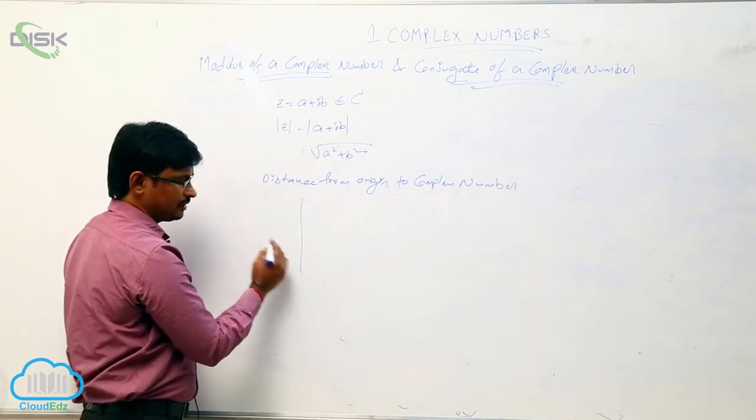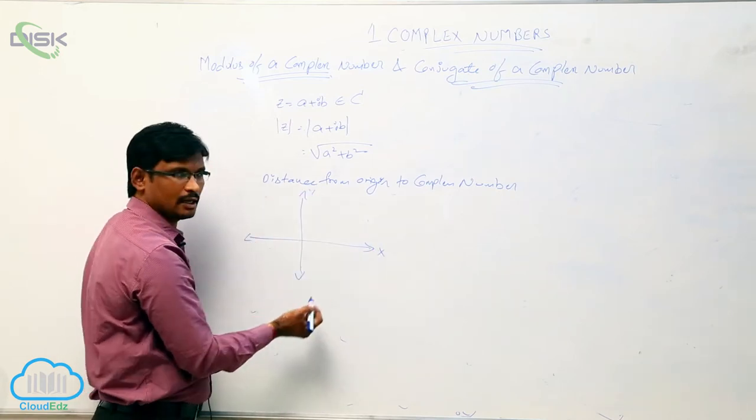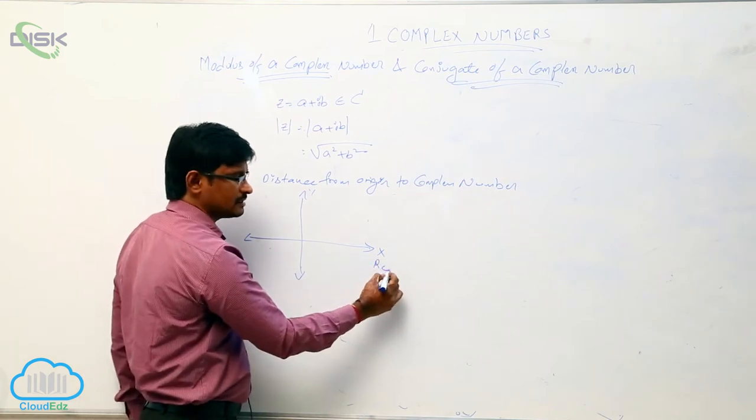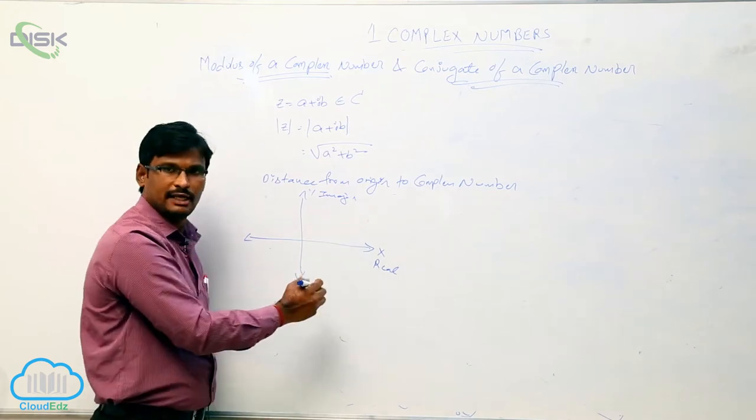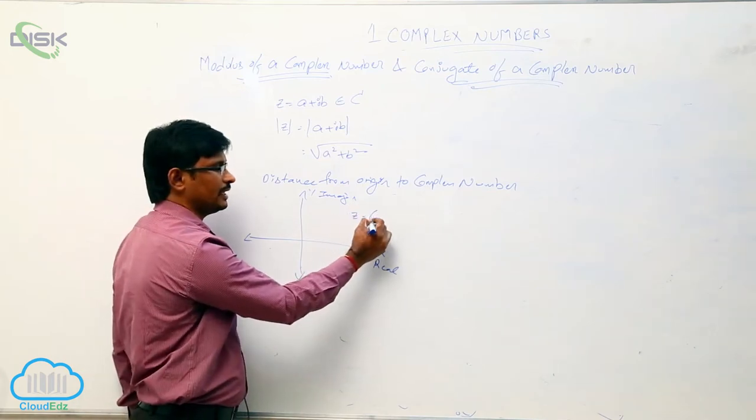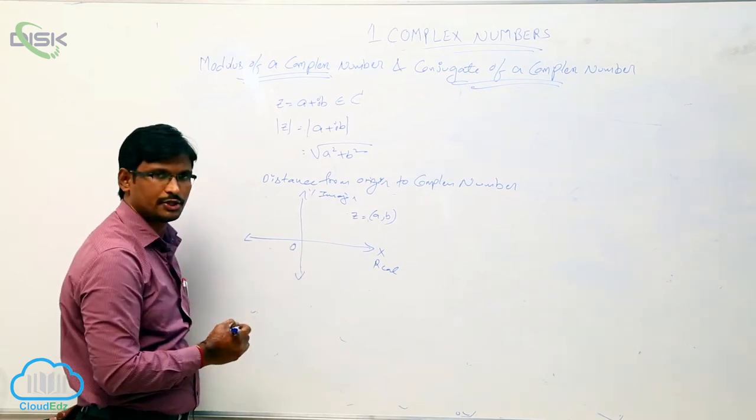If we see the Argand plane, we know that on x axis this is the real numbers and this one is imaginary numbers. If we take, let here z equal to a comma b, this is in first quadrant and here this we know that it is the origin.